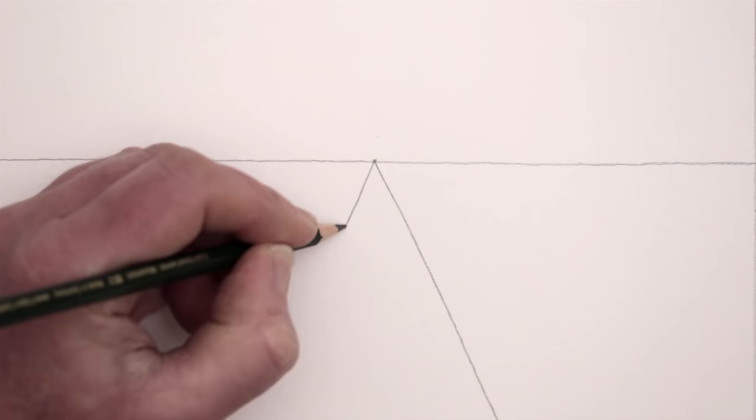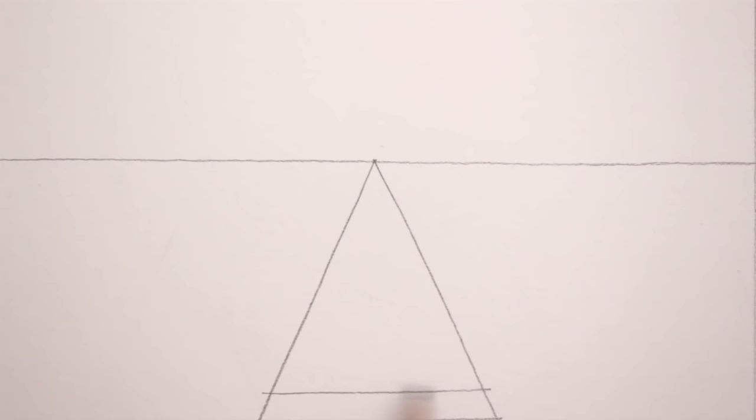To make this into a railway track, draw a series of horizontal lines that get closer together as they go towards the vanishing point.